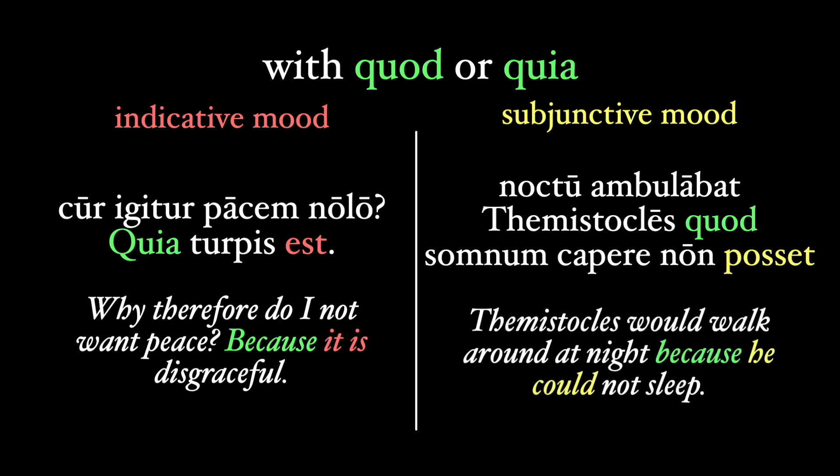But here's another from Cicero that uses the subjunctive. Noctu ambulabat Themistocles quod somnum capere non posset — Themistocles would walk around at night because, as he claimed, he could not sleep. Our source for Themistocles' sleeplessness is different from the writer, and so we use the subjunctive.